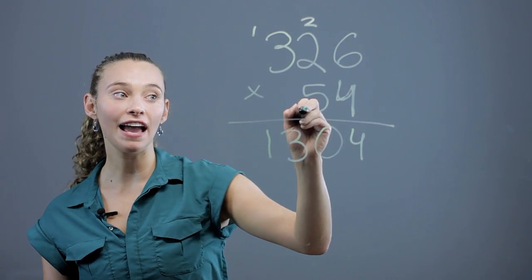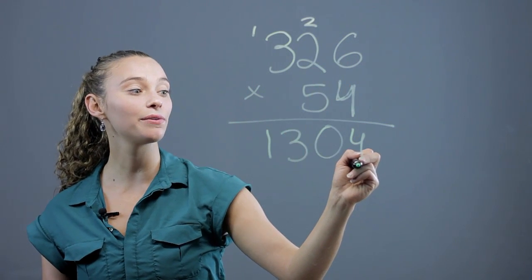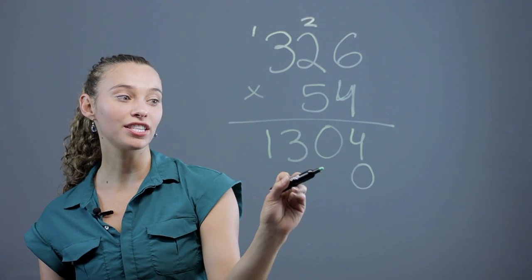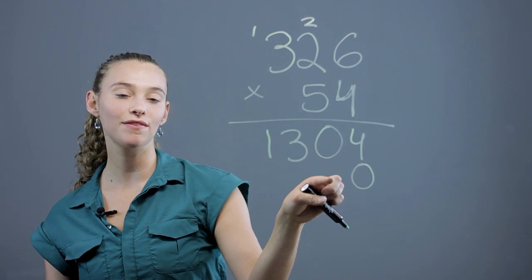Now we go to the 5. The important thing to remember is that you have to set a 0 placeholder in the ones digit. You have to start one over because you're starting at the second place.